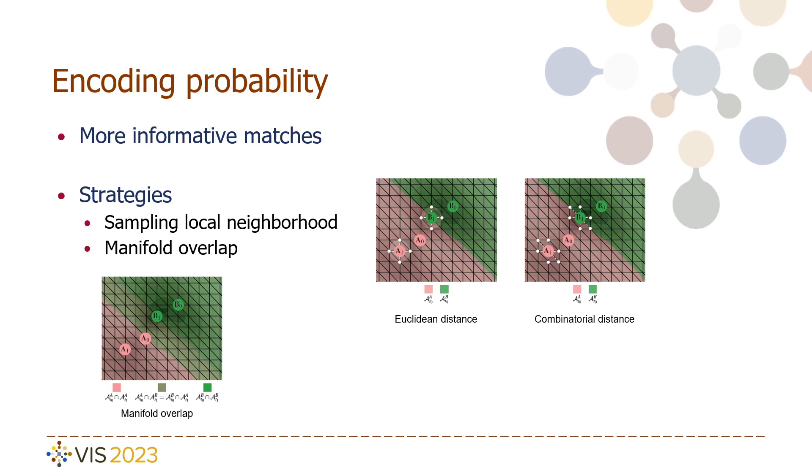For our second strategy, we look at the entire manifolds. For each extrema we track, we calculate the size of the manifold by summing the number of vertices within. We create correspondences by checking how many vertices of an extrema's manifold in time step t fall into manifolds in t minus 1 or t plus 1. We once again get a list of matches and the probability is derived by dividing the overlaps with the size of the manifold of the current extrema.